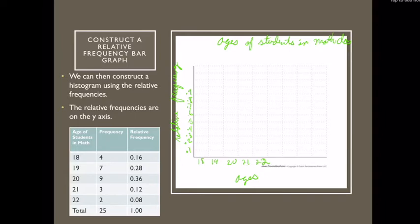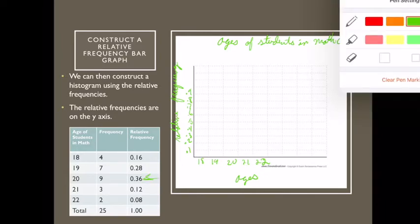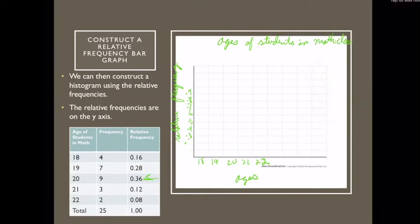Actually, that was a mistake. And the reason that was a mistake is my highest relative frequency is only 36. So I'm going to go ahead and get rid of those. And let's change that. Maybe we should count by 0.05. That sounds better. So I have 0.05, 0.1, 0.15, 0.2, 0.25, 0.3, 0.35, 0.4. That's a little bit better.